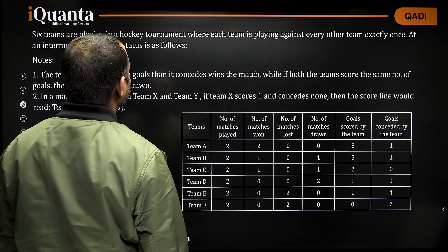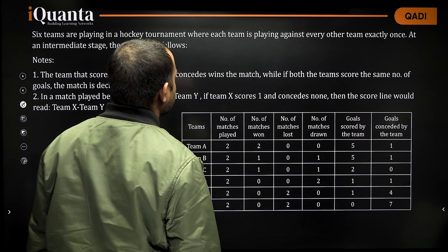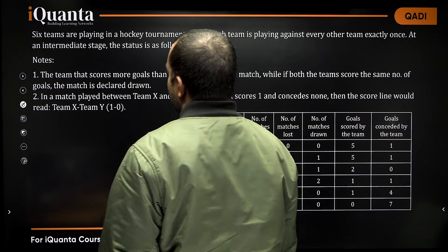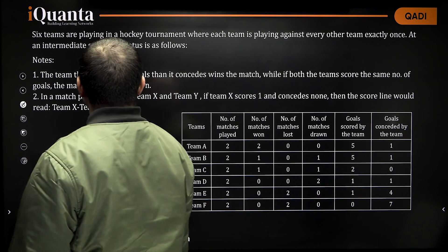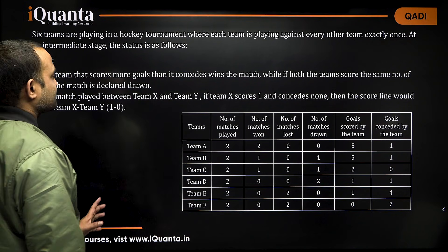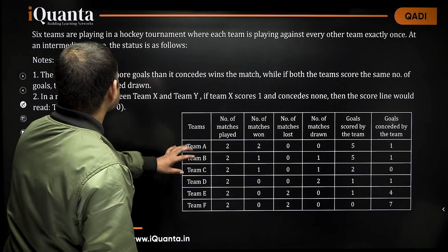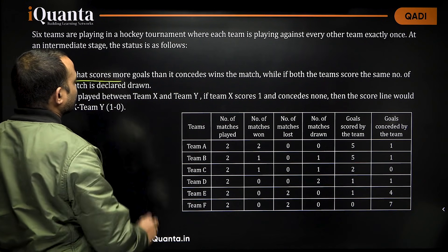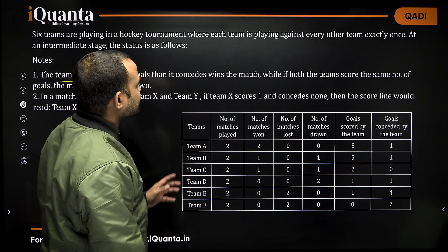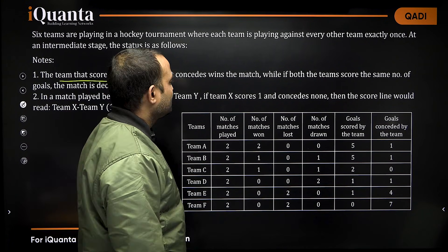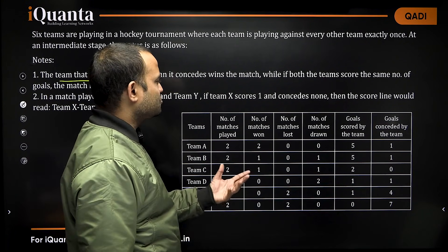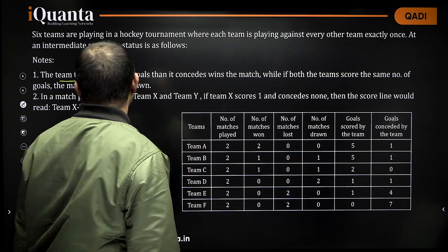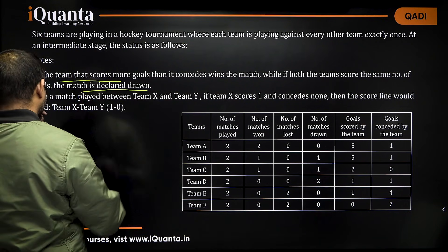Six teams are playing in a hockey tournament where each team is playing against every other team exactly once. At an intermediate stage, the status is as follows. It is given that the team that scores more goals than it concedes wins the match, while if both teams score the same number of goals, the match is declared drawn.